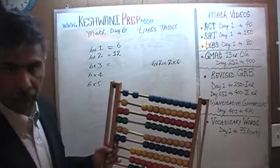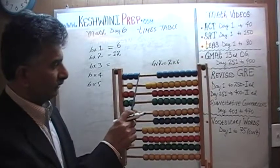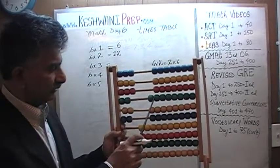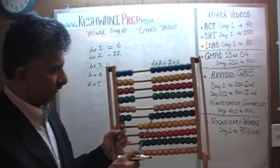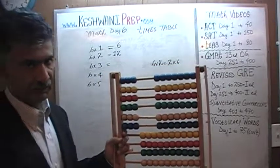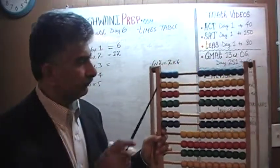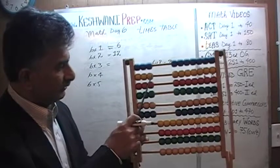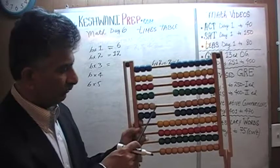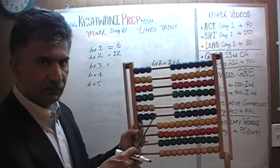How about six threes? Instead of twos we have threes. We build up: two threes, three threes, four threes, five threes, and six threes. Six threes — we just count by threes using our table of threes: three, six, nine, twelve, fifteen, and eighteen. Six threes are eighteen.